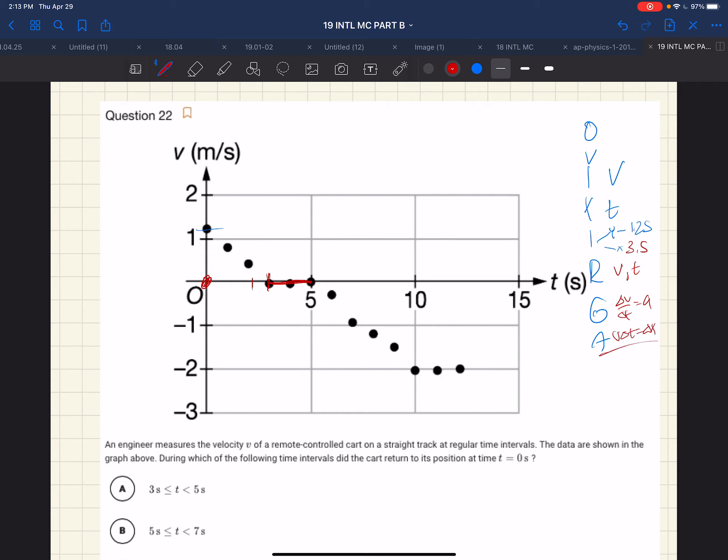We're ready now. The engineer measures the velocity at irregular time intervals. The data is shown in the graph. During which of the following time intervals did the cart return to its position at time t = 0?